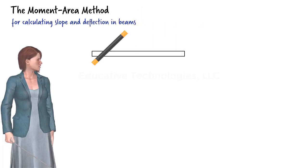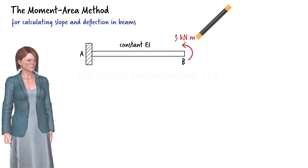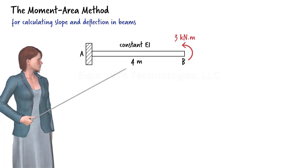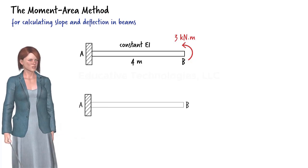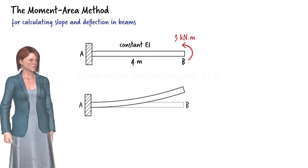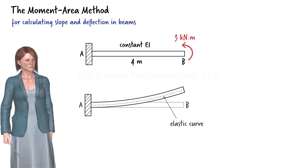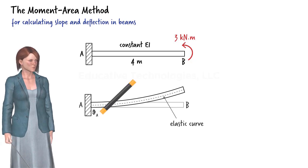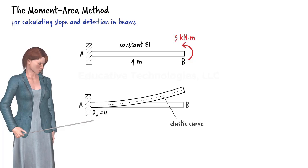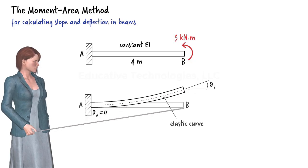Let's start by considering a cantilever beam subjected to a concentrated moment at its free end. The length of the beam is 4 meters. Naturally, the beam is going to deflect upward. We refer to the deformed line along the neutral axis of the beam as its elastic curve. Let's use theta A to denote the slope of the elastic curve at the left end of the beam and theta B to refer to the slope at the free end.